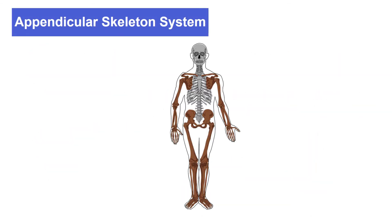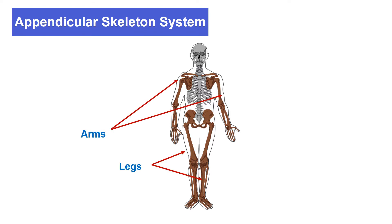The appendicular skeleton system — the human body has two arms and two legs. The different parts of the arms and legs have several bones, which are connected together by joints. So let's see joints and types of joints.